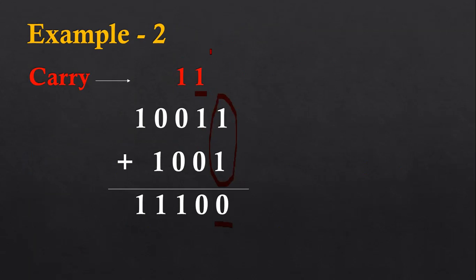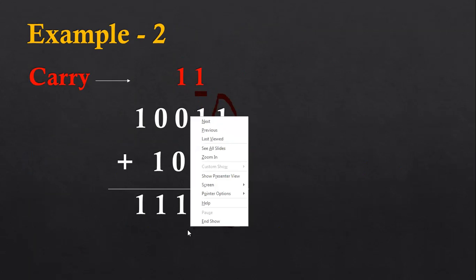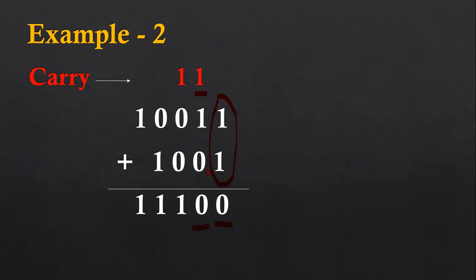Now I need to add the next column including this carry. So we have one, one, one — three bits available here. Again, one plus one gives zero, and it is providing a carry. Including this carry, I add the zeros: one, zero, zero — result will be one. Then zero plus one is one, and then one will be available here. So finally the addition result will be 11100. This way we can add two corresponding ones and identify the carry value, and I explained how to use the carry values in the next columns.